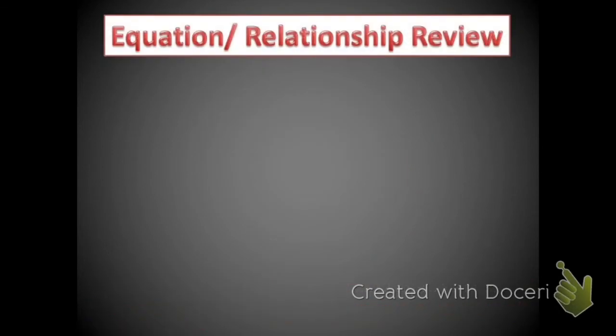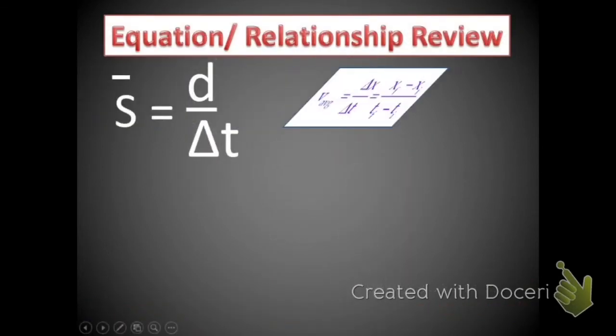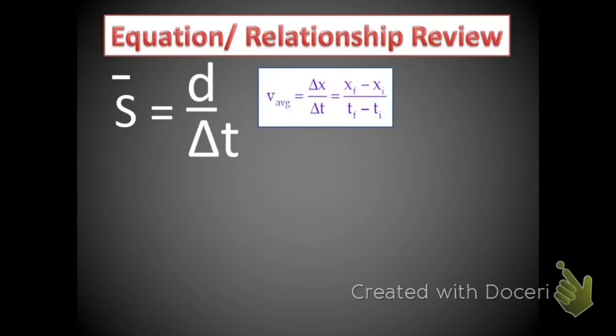So let's review some of the things we've talked about so far in this chapter. We started by defining speed as equal to distance divided by time. Then we talked about average velocity as displacement over time.